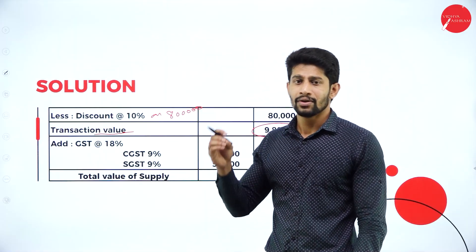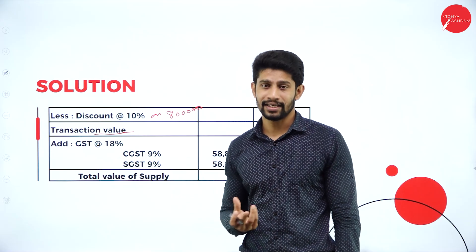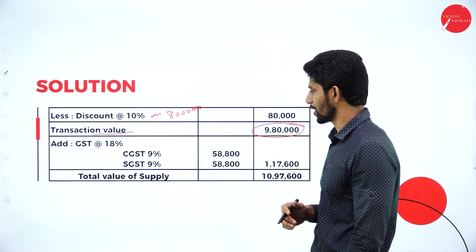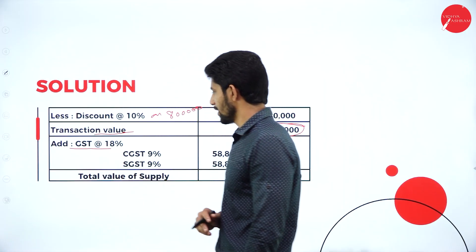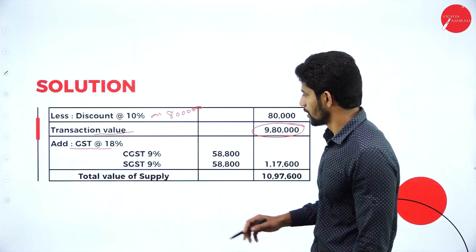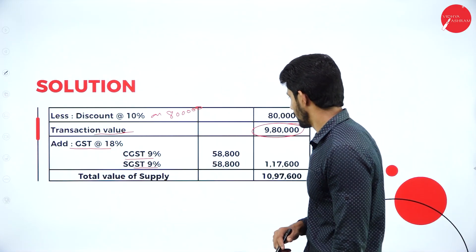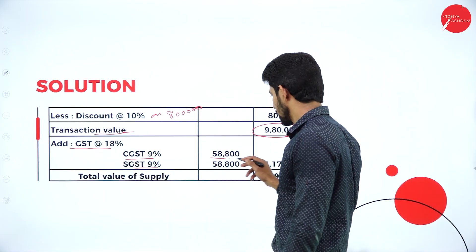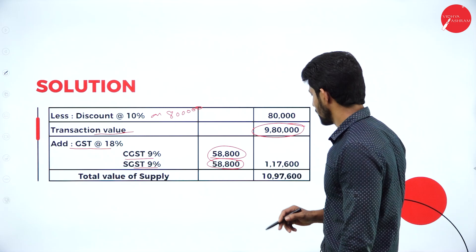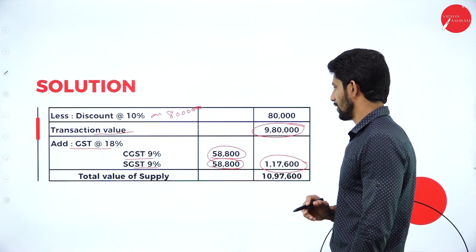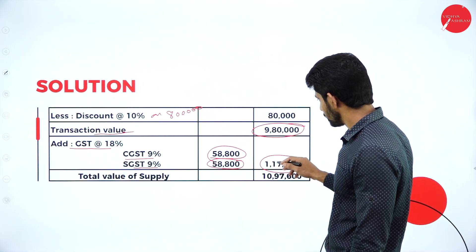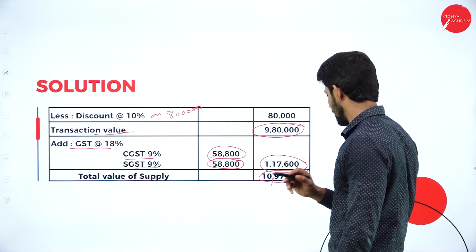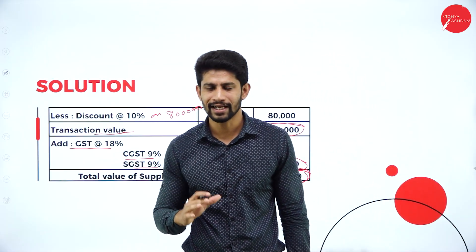Since inter-state or intra-state is not mentioned in the problem, assume it is an intra-state transaction — CGST and SGST applicable. Compute GST at 18%: 9% CGST and 9% SGST on ₹9,80,000 gives ₹58,800 each, totalling ₹1,17,600. Add ₹1,17,600 to ₹9,80,000 — the total value of supply is ₹10,97,600.